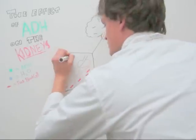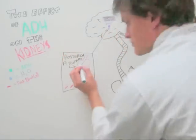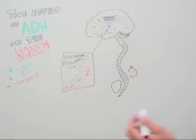The posterior pituitary gland is an extension of the neurohypophysis, which is actually a part of the hypothalamus, and it secretes ADH into the blood vessels.